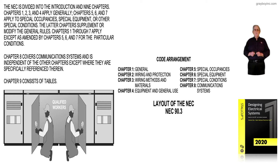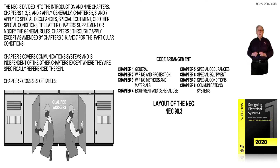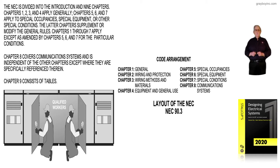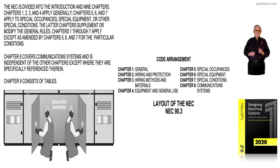The latter chapters supplement or modify the general rules. Chapters 1 through 7 apply, except as amended by chapters 5, 6, and 7 for a particular condition. Chapter 8 covers communication systems and is independent of the other chapters except where they are specifically referenced.